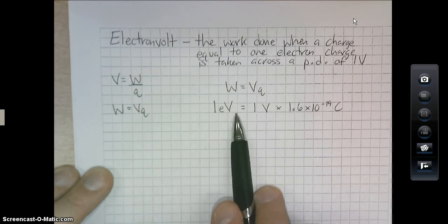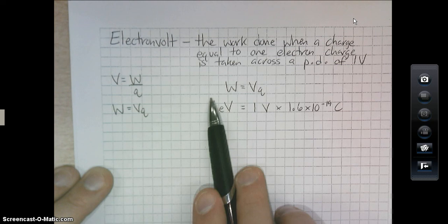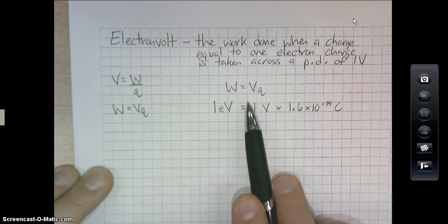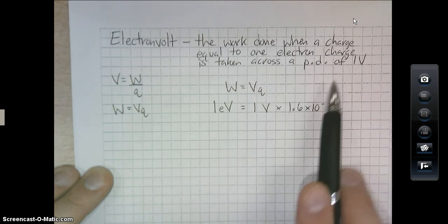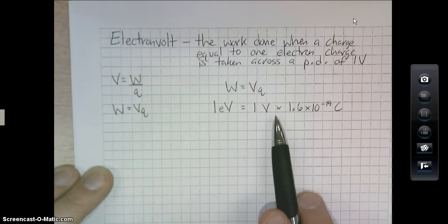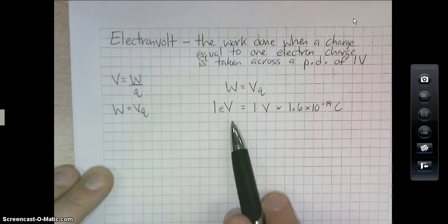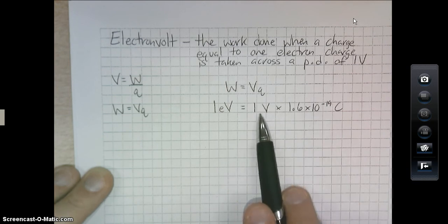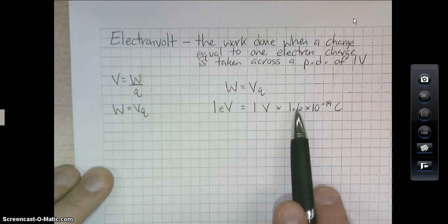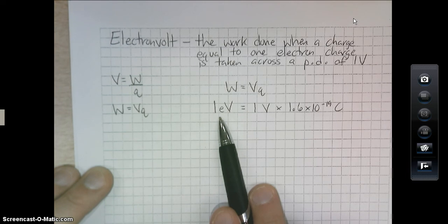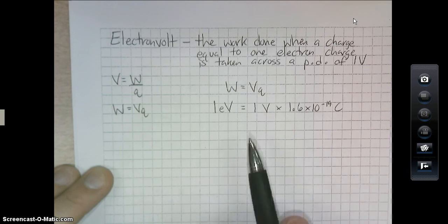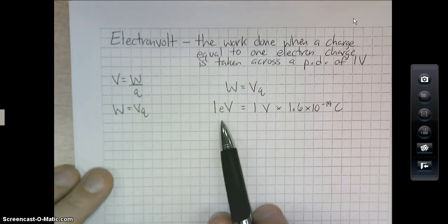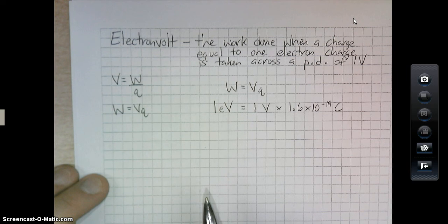So, if we took one electron across a two volt potential difference, then you would have two electron volts. If we took three electrons across a five volt potential difference, then we'd have 15 electron volts. So, this is just a slightly easier way so that we don't have to deal with things like to the negative 19th all the time. We can use nice numbers instead.